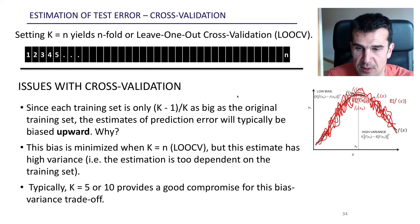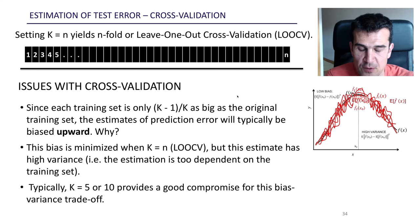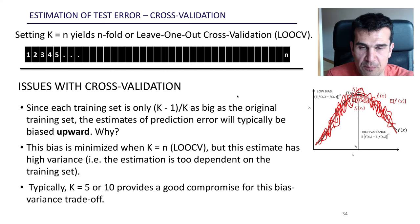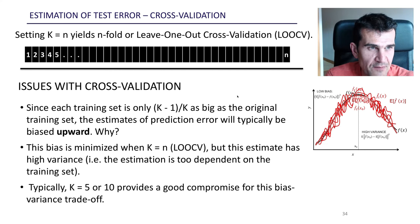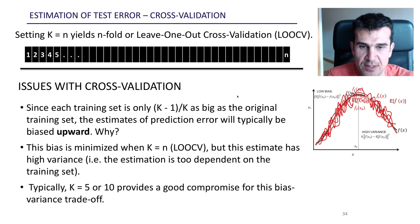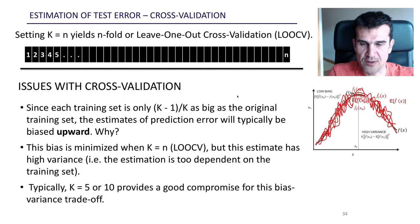As usual, the sweet spot is somewhere in between — it's probably not leave-one-out and it's not just two-fold cross-validation. In the literature, people usually recommend using five-fold or ten-fold cross-validation, basically dividing the dataset into five or ten different blocks. With this we finish validation and cross-validation — two techniques to estimate the test error. Thanks for watching and I'll see you very soon in the next video!